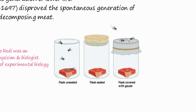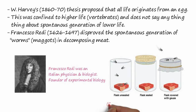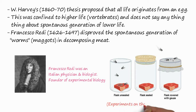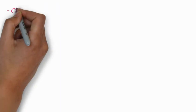The uncovered flask contained degenerated maggots, while the sealed flask did not contain any maggots. The flask covered with gauze also did not contain maggots. These were the experiments on the generation of maggots.